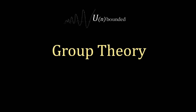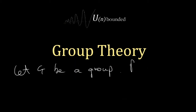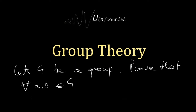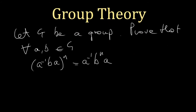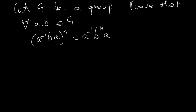Hello everyone, welcome to a new video on group theory. Let's do a problem. Let G be a group, then prove that for any elements a and b in the group, we have (a⁻¹ba)ⁿ = a⁻¹bⁿa.